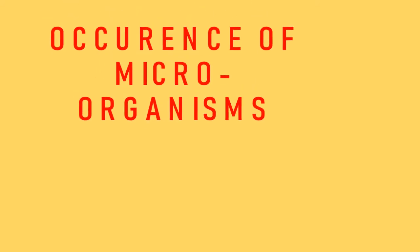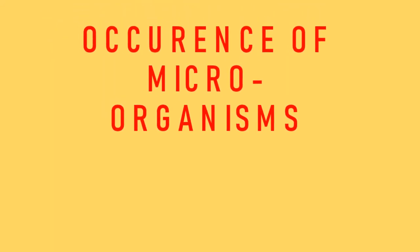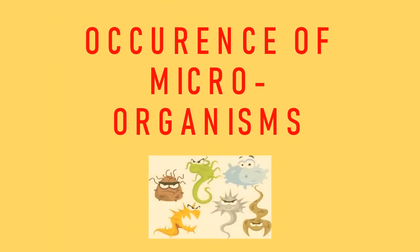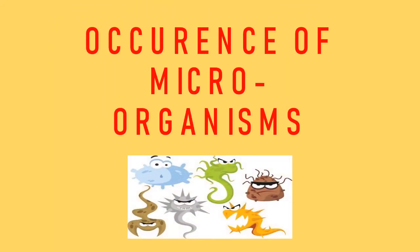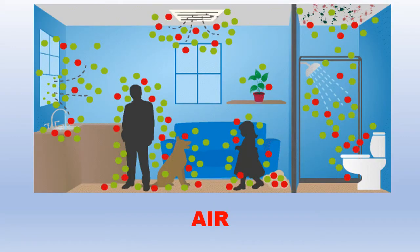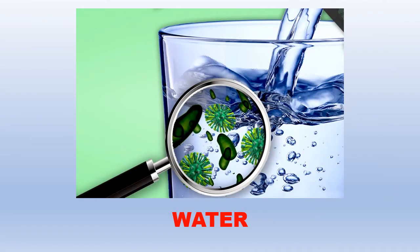Hello everyone. In today's video we are going to learn about occurrence of microorganisms, which means we are going to see where these microorganisms live or where they are found. So let us proceed. Microorganisms are very commonly found in air, in water, soil, food, sewage, garbage, plants, and the roots of plants normally under the ground.